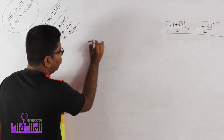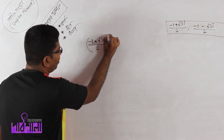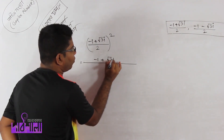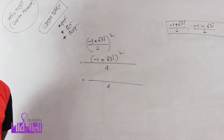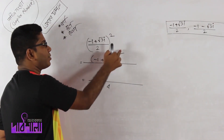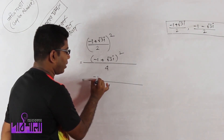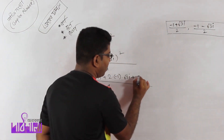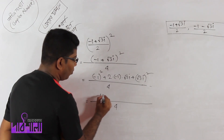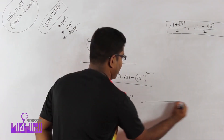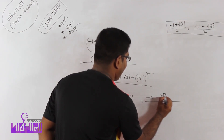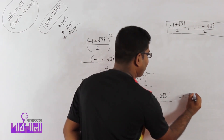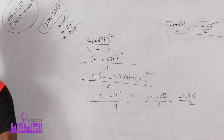Minus 1 plus root 3i divided by 2, whole squared — applying (a+b)² = a² plus 2ab plus b² — gives 1 minus 2 root 3i minus 3. Then minus 2 minus 2 root 3i divided by 4. This simplifies to minus 1 minus root 3i divided by 2.